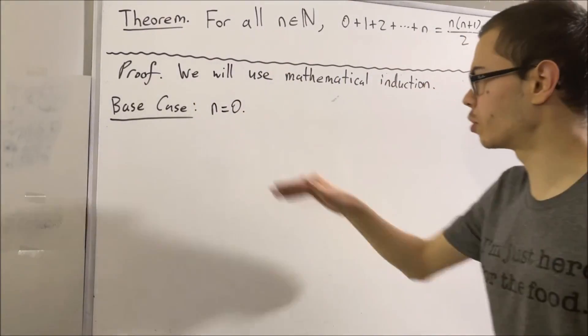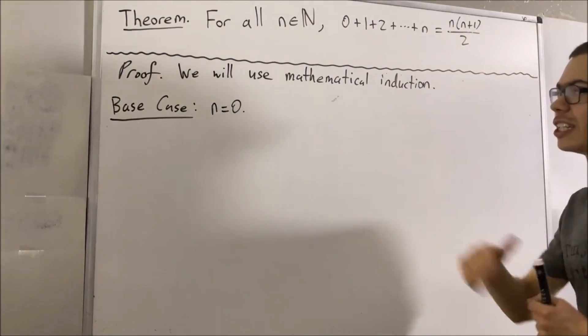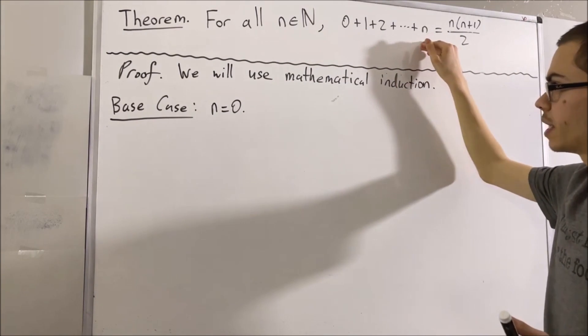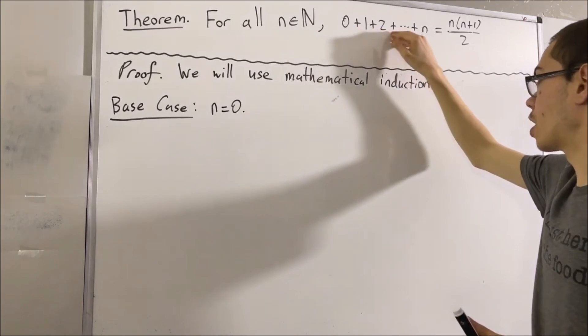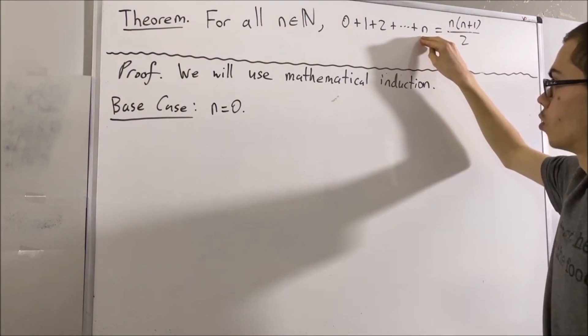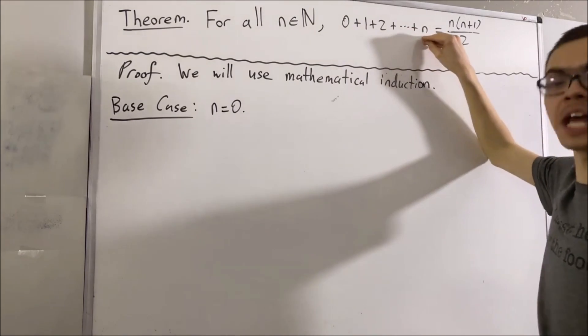Now, if n is equal to 0, I think it's pretty clear that this sum is equal to 0. Because really, this is a sum where we are basically summing all the way up to n, which means we stop adding once we reach n.